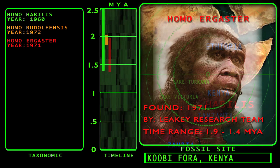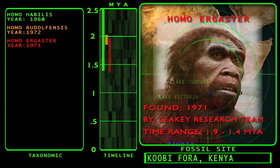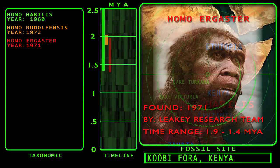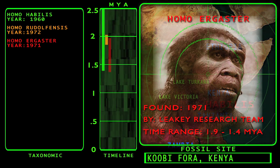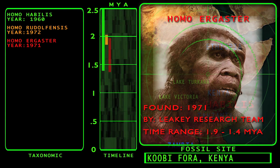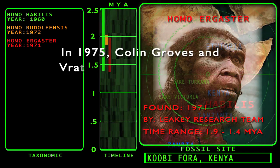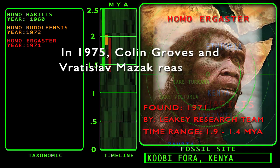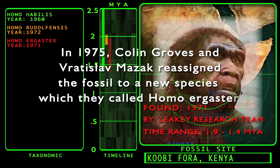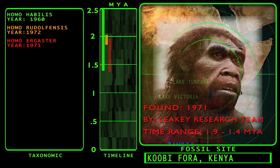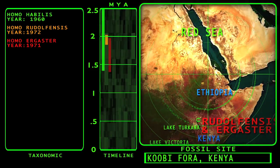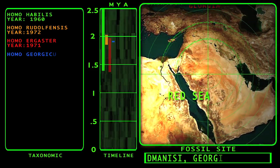The first fossil find designated Homo ergaster was made in 1971 in Koobi Fora near Lake Turkana in Kenya by members of Richard Leakey's research team. The fossil was first designated Homo habilis. In 1975, Colin Groves and Vratislav Mazák reassigned the fossil to a new species which they called Homo ergaster. The range of ergaster is estimated to be 1.9 to about 1.4 million years in the past.